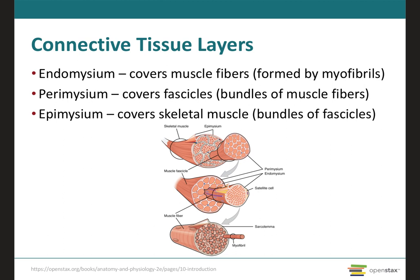As we have mentioned already, each skeletal muscle is going to be an organ that will consist of various integrated tissues. These tissues include the skeletal muscle fibers, the blood vessels, the nerves, in addition to connective tissue, which is what we're going to cover on this slide. Each skeletal muscle has three layers of connective tissue: the endomysium, the perimysium, and the epimysium.